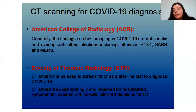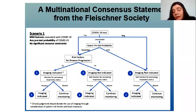Scenarios include: if symptoms are consistent with COVID-19 and the test is not available, and the pretest probability is moderate to high with risk factors, imaging is more indicated. If not, we can monitor the patient. If the probability is low, imaging is not indicated and we can only monitor the patient. If there is worsening respiratory status, we can do the imaging.